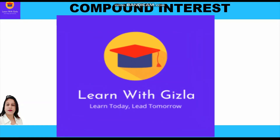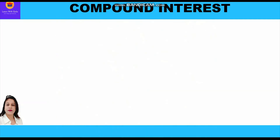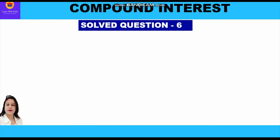Hello dear students, welcome to YouTube channel Learn with Gizla. In this video we shall take up a question where interest is compounded both half yearly and quarterly and we have to find which option is better. We shall use unitary method to solve this question as we are yet to start the formula methods. The unitary method has been explained in the conceptual video, with a link provided in the description box.